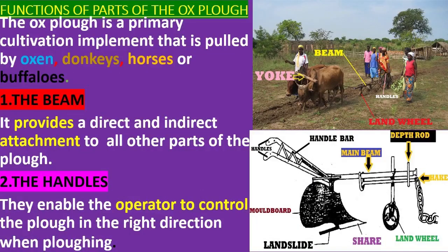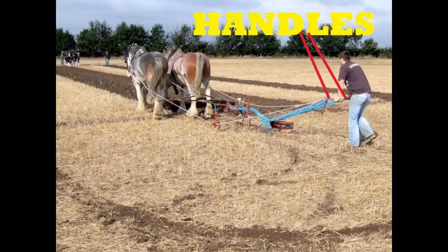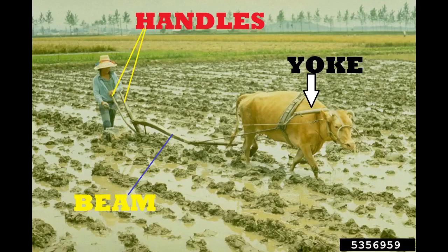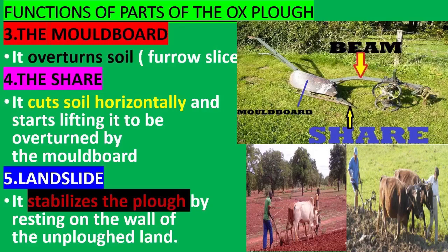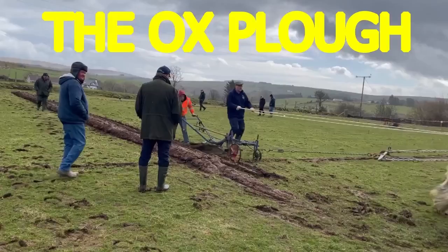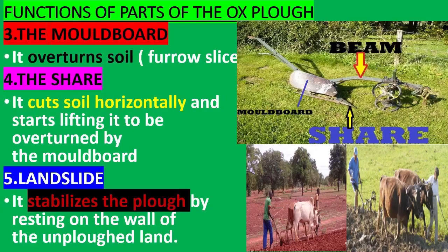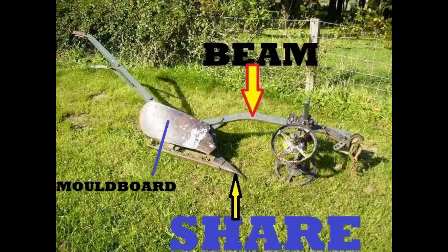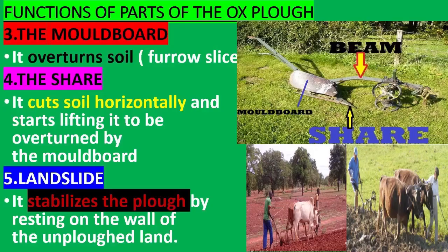The handles enable the operator to control the plow in the right direction when plowing. The moldboard overturns soil. The share cuts soil horizontally and starts lifting it to be overturned by the moldboard.